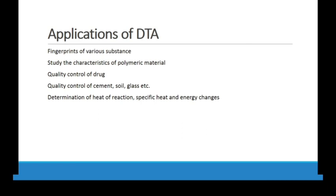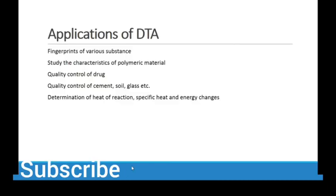Same as DSC, DTA will show melting curves, crystallization, and glass transition. It is used for quality control of drugs — you can determine melting point, crystallinity, and amorphous forms of different drugs. It is also used for quality control of cement, soil, and gas sectors, where you can check the exothermic and endothermic nature of substances, as well as for determination of heat of reaction, specific heat, and energy changes like heat capacity. The glass transition event reveals the heat capacity of your material.